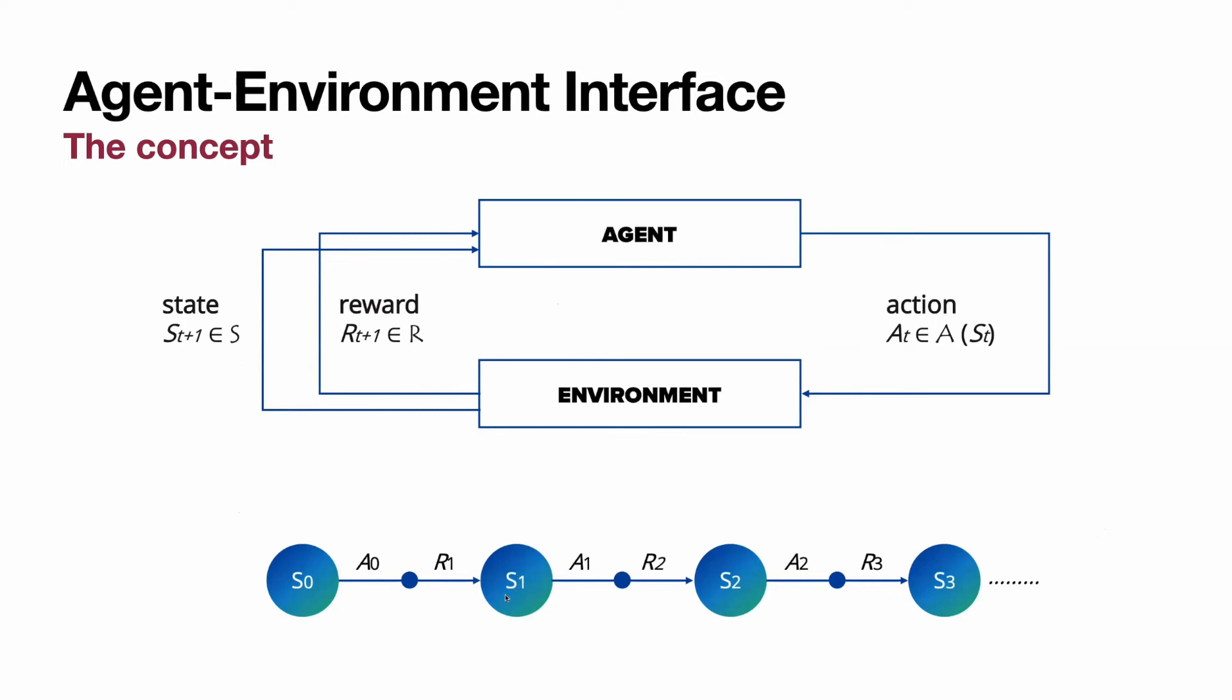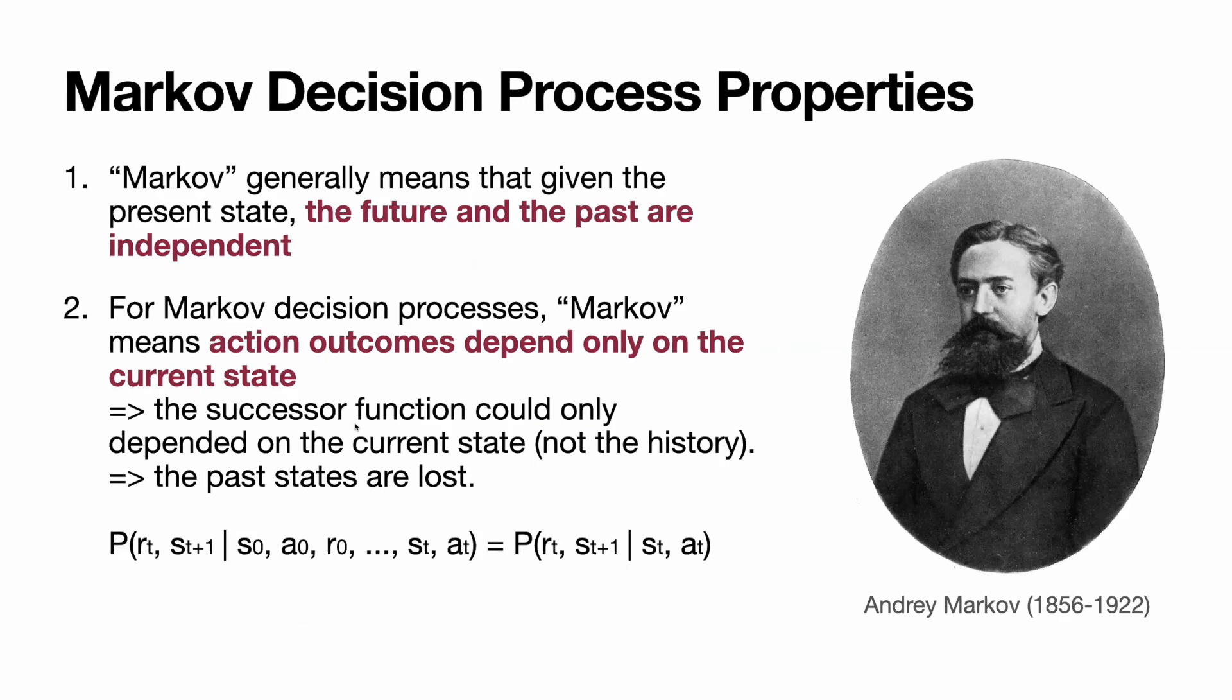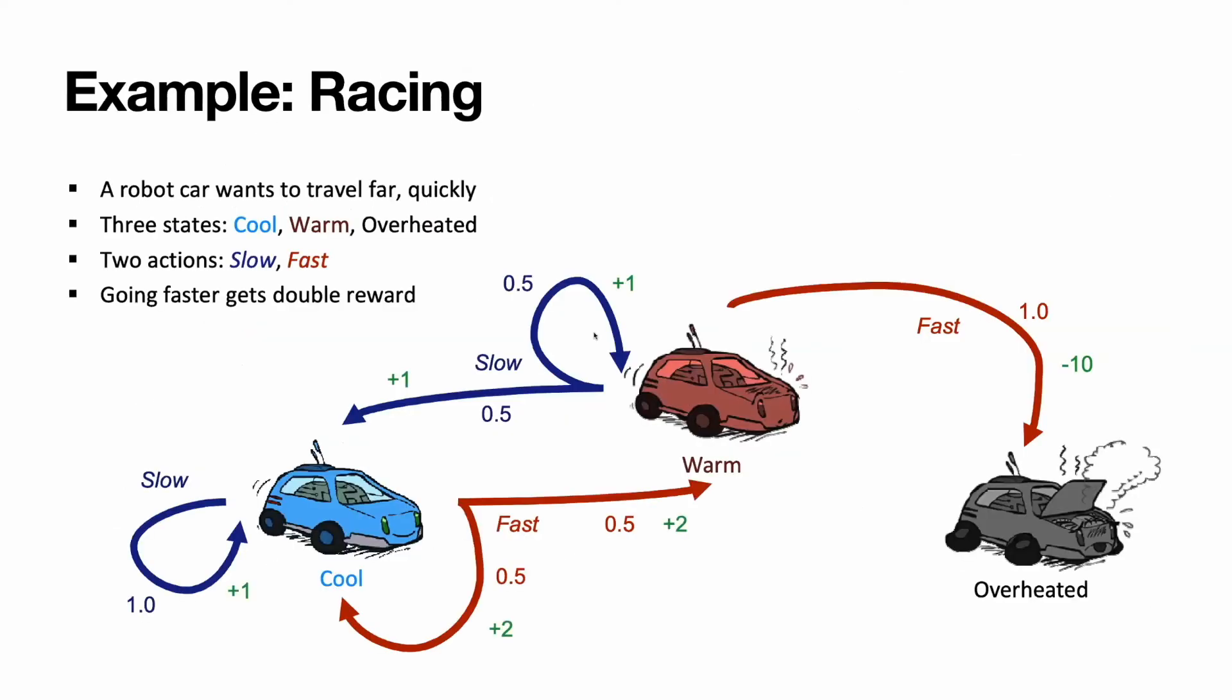Subsequently, if we are in S1, the same holds true for A1 or R2. We don't care about all the past states. So the successor function is dependent only on the current state, not on the history, and the past states are lost. Here is an example of a Markov decision process.